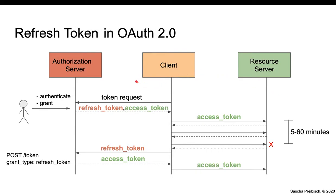Now let's see how this looks if there are Refresh Tokens. The client sends a token request, the user authenticates and grants the request. This time the server also issues a Refresh Token. The client continues to use the Access Token against protected resources until it expires. But this time, the client uses the Refresh Token it has received, sends it to the token endpoint as a Refresh Token request, and after validation, the server issues a new Access Token. This flow continues, and the user wasn't involved at all. This assumes that the Refresh Token has a longer lifetime than the Access Token.